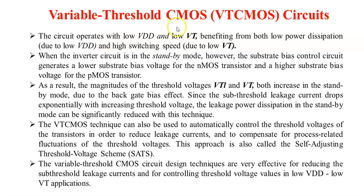In the VTCMOS circuit, the circuit operates with low VDD as well as low VT for getting low power dissipation. At the same time, it achieves high switching speed through reduction of subthreshold leakage and standby power dissipation. With the substrate bias control circuit, we can adjust the substrate bias voltage to compensate the threshold voltages. This approach is called the self-adjusting threshold voltage scheme, or SATS. It is a very effective method for controlling threshold voltage for low VDD and low VT applications.